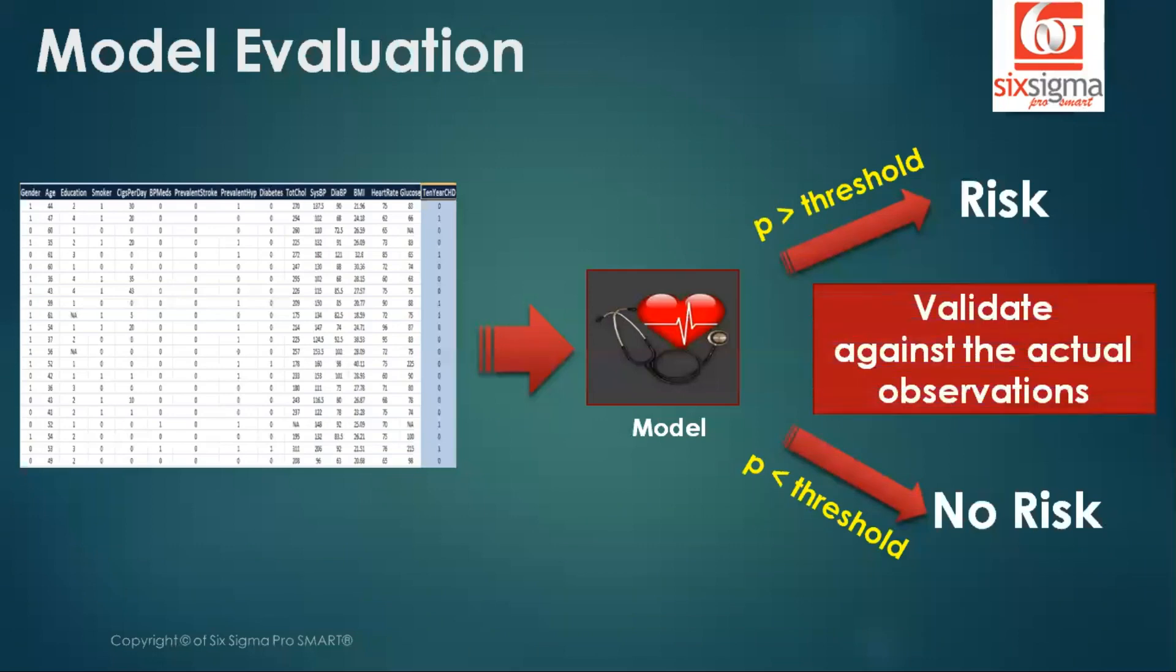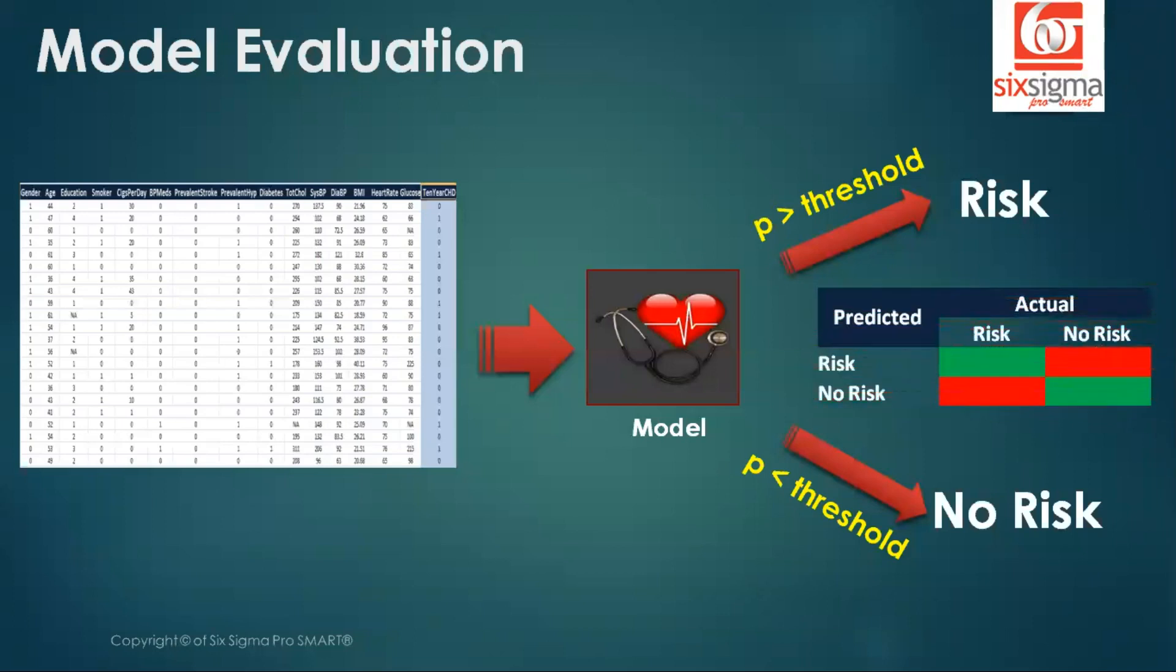Over a period of time, in order to evaluate whether the model is doing good or not, we will have to validate it against the actual observations. And how do we do that? We simply map the predicted observations with the actual observations. So if it was a case of risk, and the model also predicted it as a risk, or if it was a case of no risk, and the model also predicted it as no risk, we get a green. That is a match. But if there are cases where there is a mismatch between the actual versus predicted and contributes to the inaccuracy of the model.